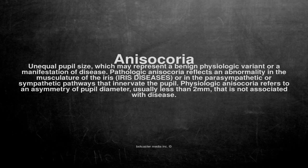Physiologic anisocoria refers to an asymmetry of pupil diameter, usually less than 2 mm, that is not associated with disease.